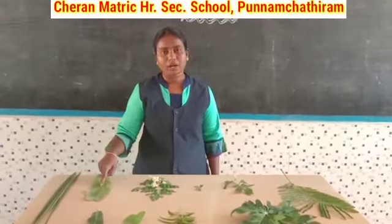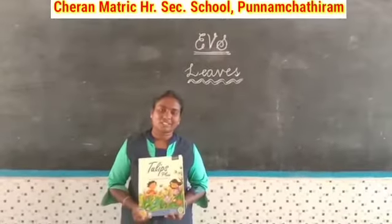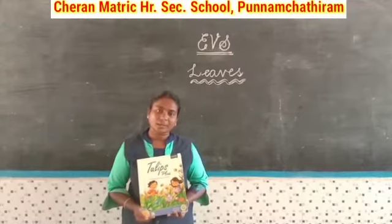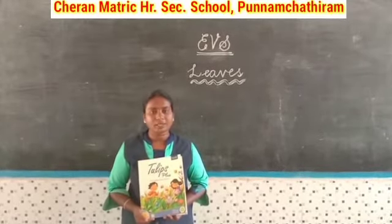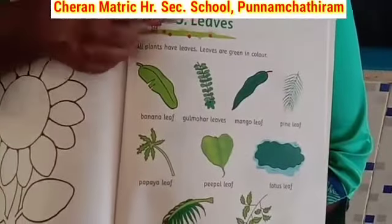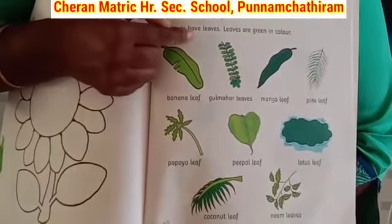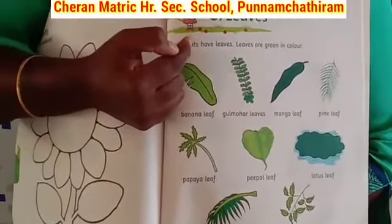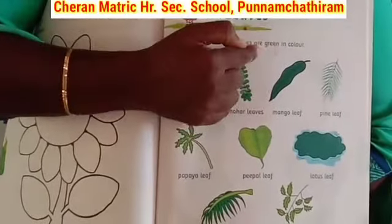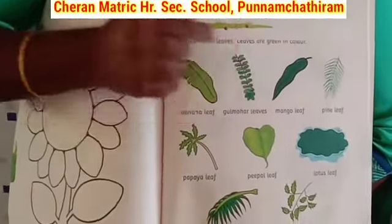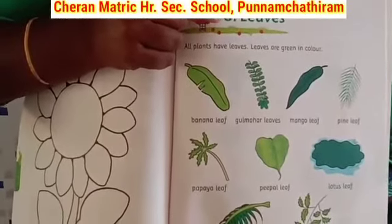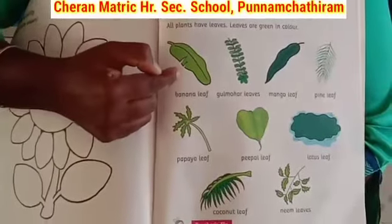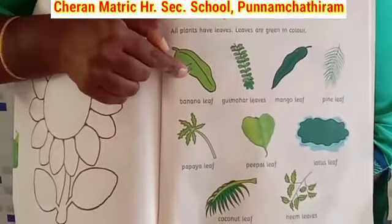Gulmohar leaves, tomato plant leaves, tulsi leaves, drumstick tree leaves, and banana leaves. Children, open your book and go to page number 99 — Leaves. All plants have leaves.